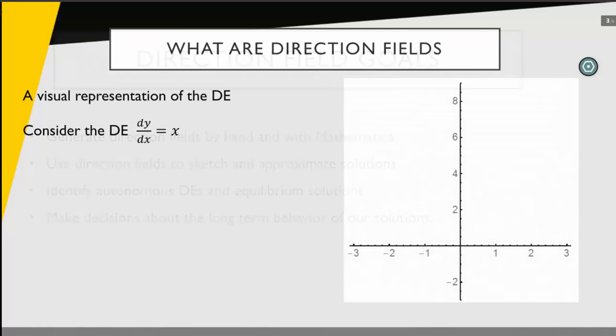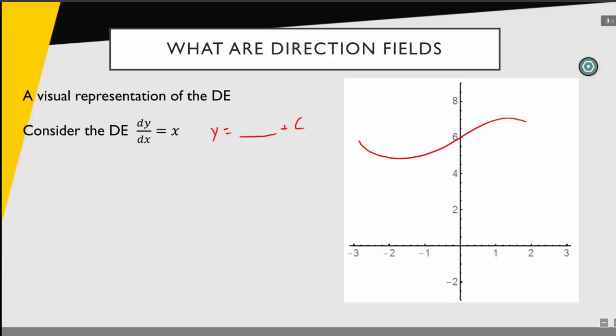So let's get started. Direction fields are a visual representation of the differential equation. Consider the differential equation dy/dx equals x. In general the solution could be y equals some curve plus some constant — a family of curves. If I knew what the curve was I could plot it, but I don't necessarily know what that solution is yet. However, I do know a lot of information about how the solution curve will behave.